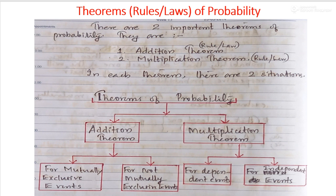Under each of these theorems, there are two situations. The Addition Theorem is explained by dividing the situations into two categories: Mutually Exclusive Events and Not Mutually Exclusive Events. Similarly, the Multiplication Theorem of Probability is explained by dividing the events into dependent events and independent events.